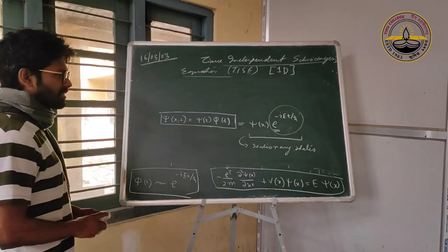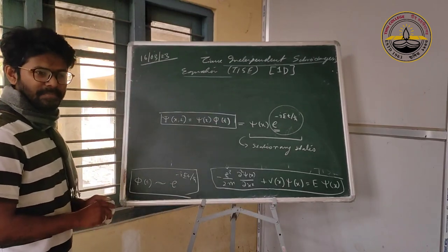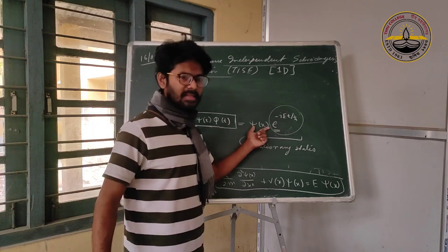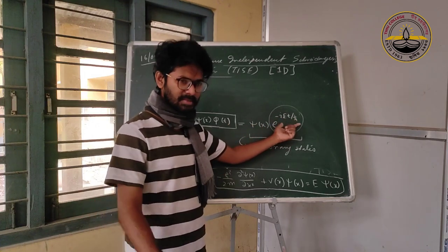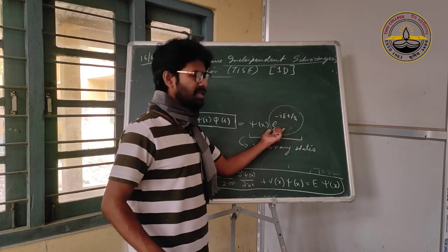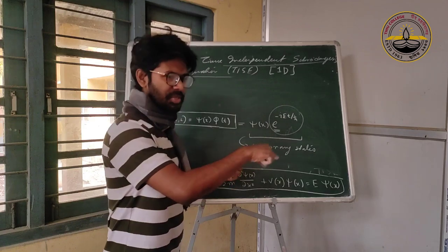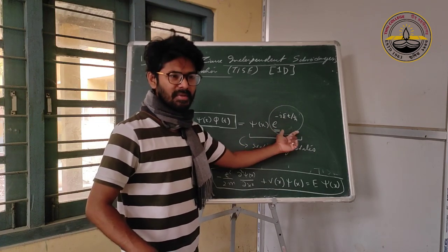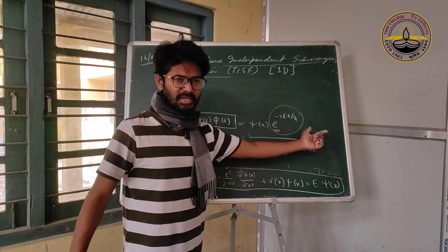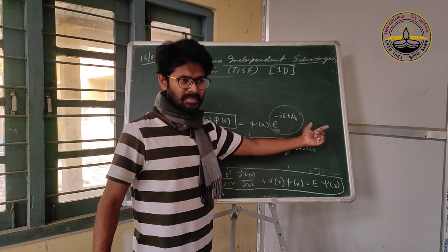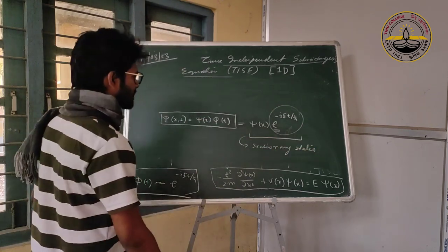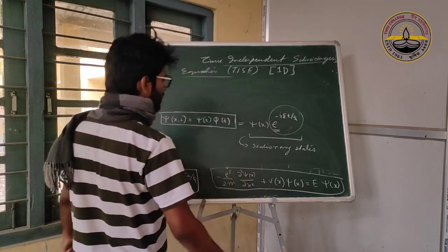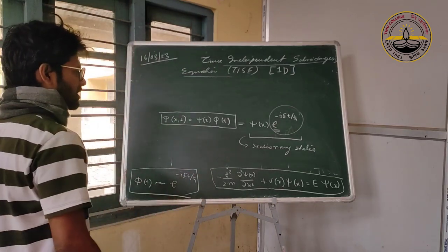Stationary states are called stationary because the probability density doesn't change in time. But clearly there is a time-dependence — however, in a very special way. The time piece is just an oscillation: e^(−iEt/ħ) = cos(Et/ħ) − i·sin(Et/ħ). It has both real and imaginary parts, and they oscillate.